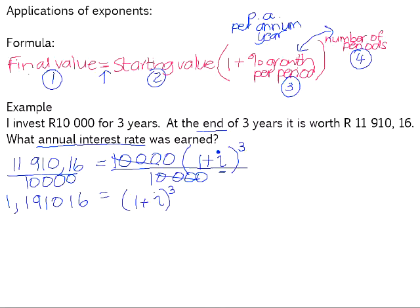And 11,910 rand and 16 divided by 10,000 is 1.191016. Don't round off during a calculation because then you're not going to have an accurate answer at the end. We now want to get this 1 plus i on its own. So we need to find the cube root of both sides of the equation. That just leaves us with 1 plus i.